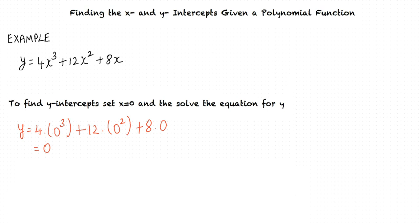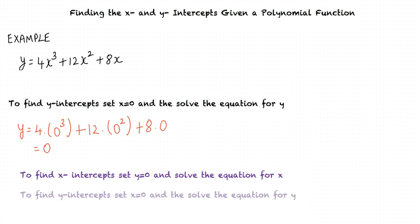I understand the concept. To find the x-intercept, we put y equals 0 and solve the equation. Similarly, to find the y-intercept, we put x equal to 0 and solve the equation.